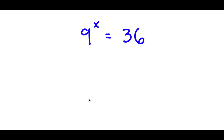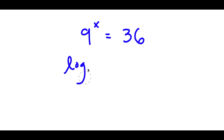In this problem, I have 9 to the power of x is equal to 36. To solve this, I'm going to first start by taking the log on both sides. So now I have log 9 to the power of x is equal to log 36.